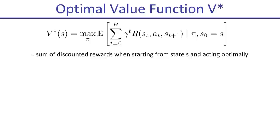Value iteration centers around the optimal value function, denoted V star. V star of S is how much expected discounted reward you can get from state S if you use the best possible policy — it's the max over all policies pi of the expected reward from state S under that policy. I'm not saying that's how you're going to find it, because there are a lot of policies to choose from and you don't want to try every possible policy.